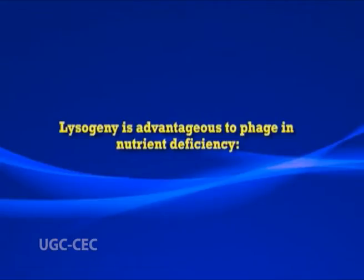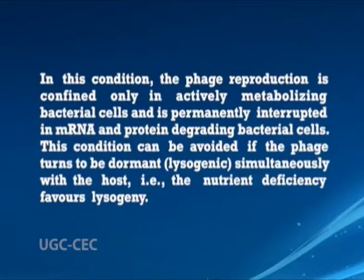The second significance is that lysogeny is advantageous for the phage under nutrient deficiency. Bacteria enter dormancy in phage-infected cultures that become nutrient-deficient, degrading their own mRNA and proteins. Under these conditions, phage reproduction is confined only to actively metabolizing bacterial cells and is permanently interrupted in mRNA- and protein-degrading bacterial cells. These conditions can be avoided if the phage turns dormant, that is lysogenic, simultaneously with the host — meaning nutrient deficiency favors lysogeny.